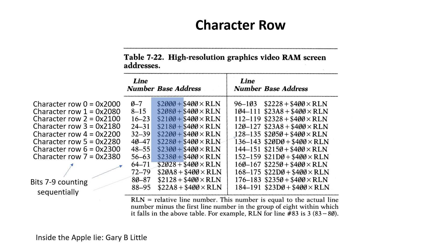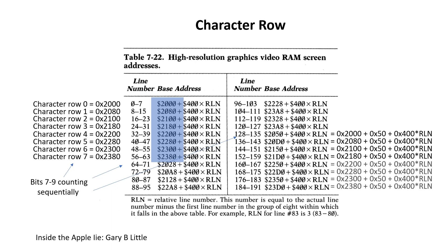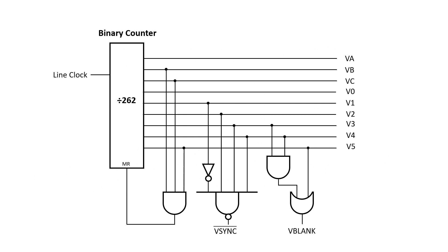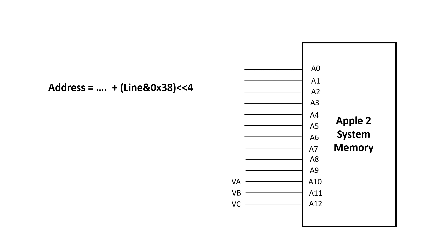Character rows 8 through 15 basically have the same pattern — they've just got hex 28 added to them. Similarly, character rows 16 through 23 have the same pattern, but this time they have hex 50 added to them. So if we do the math, it means signals V0, V1, and V2 map to video address bits 7 through 9, because we're adding 80 hex per character row.